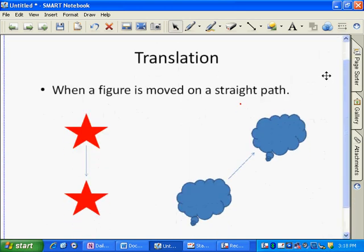A translation is when a figure is moved on a straight path. This star could be moved down, this cloud could be moved up. Direction does not matter. Translation means to slide, and I always think of that S in translation. Slide, they kind of go together.